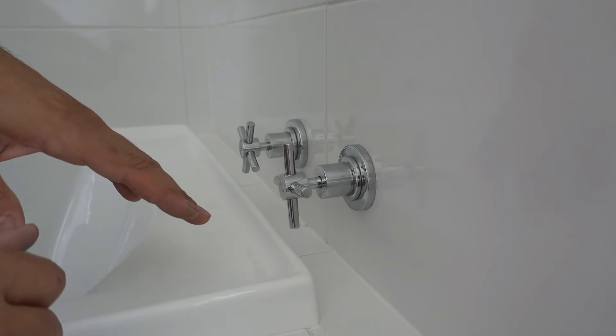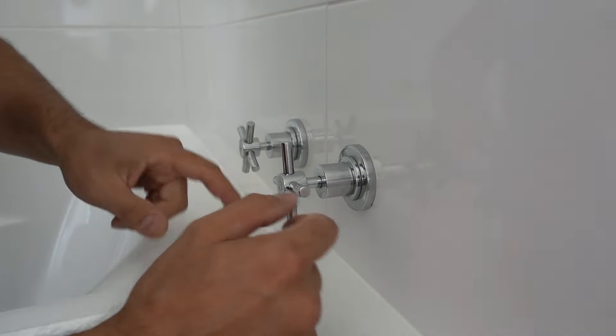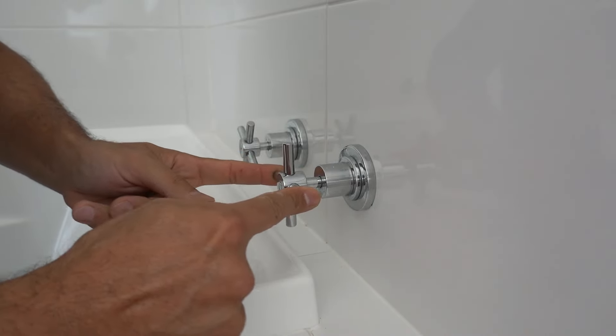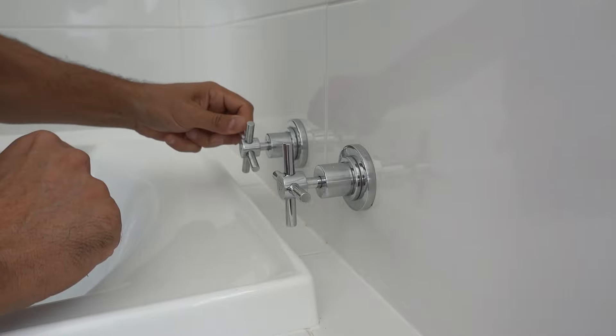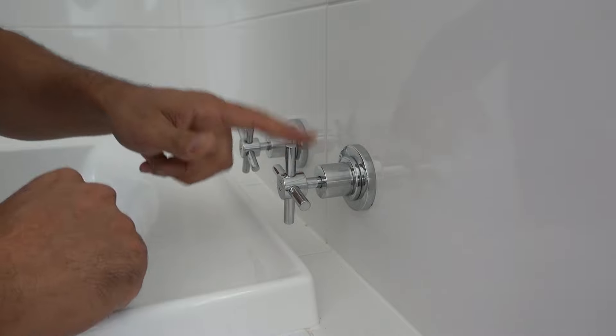Alright, so now we've got the main water switched off. You can see if we undo this one here there's no water coming out, and if we have a look at this one here you can see it's a little bit wobbly. This one here is nice and tight, that tells me somebody's been trying to take this off by force and haven't succeeded.